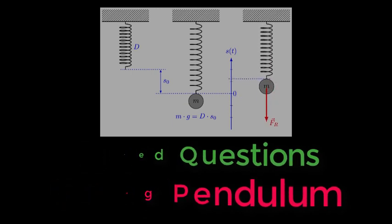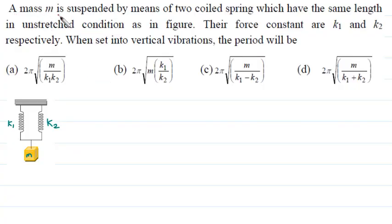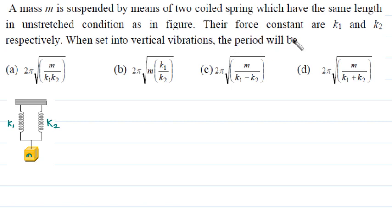First question: a mass m is suspended by means of two coiled springs which have the same length in unstretched condition as shown in figure. Both springs are suspended to the rigid support. Their force constants are k1 and k2 respectively. When set into vertical vibrations, the time period will be?